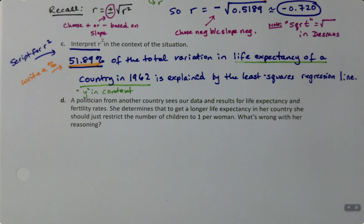Alright. Part D. A politician from another country sees our data and results for life expectancy and fertility rates. She determines that to get a longer life expectancy in her country, she should just restrict the number of children to one per woman. That's it, everybody should just have one child.